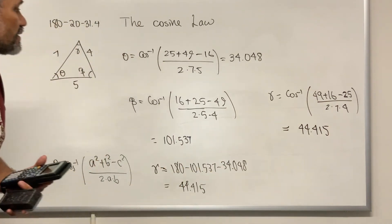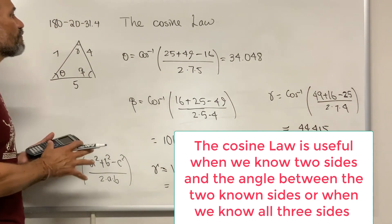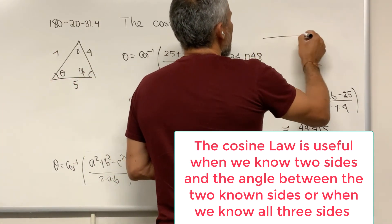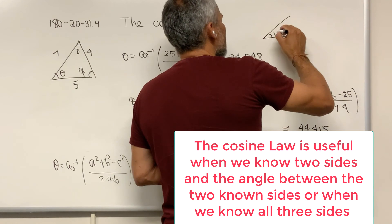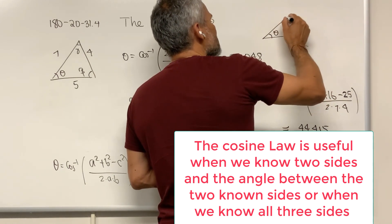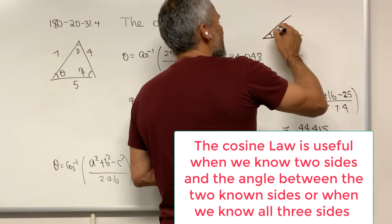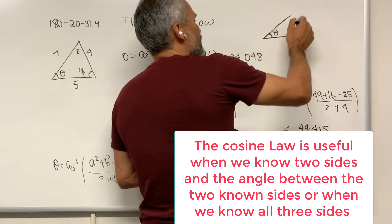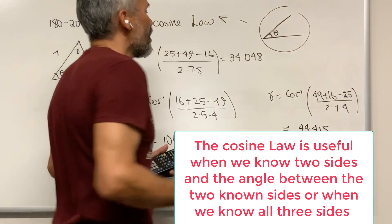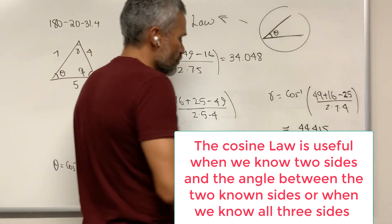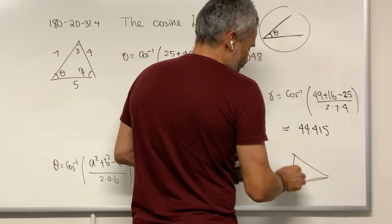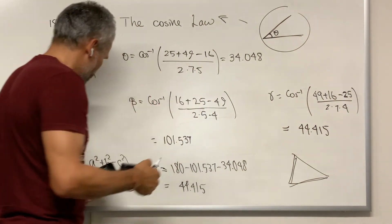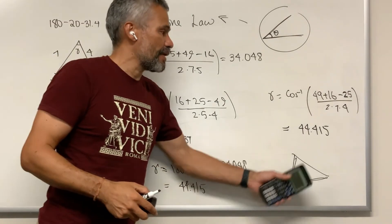This is how you solve triangles using the cosine law. It is useful when you know two sides and the included angle between them — that is, you know one side, the angle, and the other side, where both sides touch the known angle. It is also useful when you know all three sides, in which case you can use the inverse cosine formula to find all three angles.